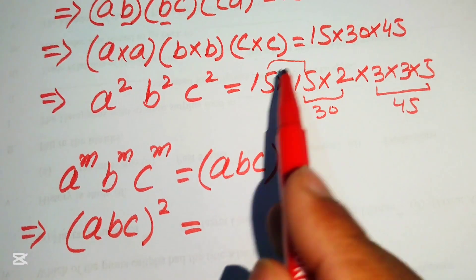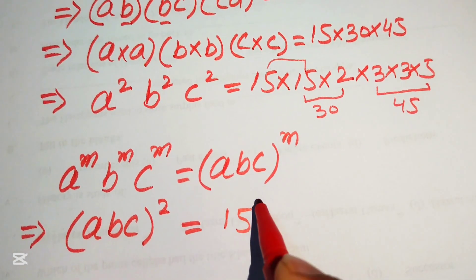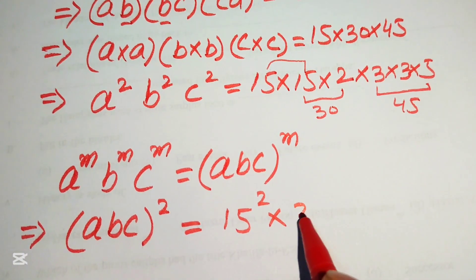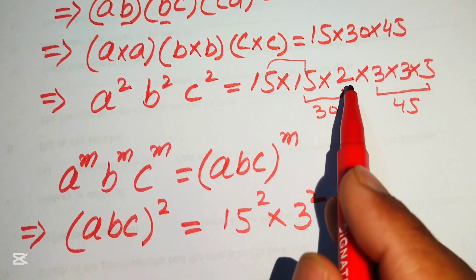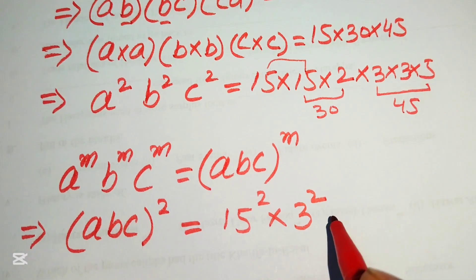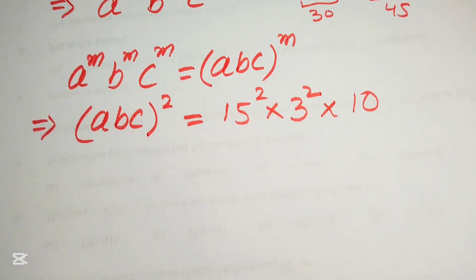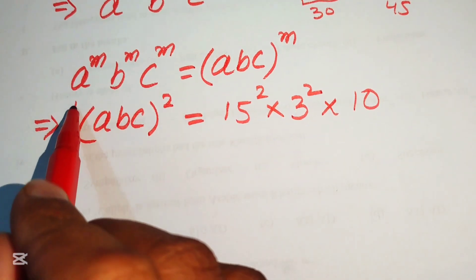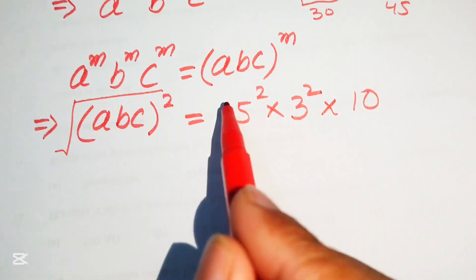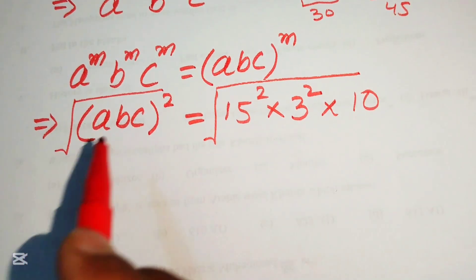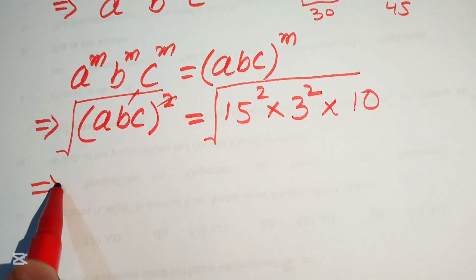So we have (abc)² = 15² × 3² × 10. To find abc, we take the square root of both sides. The square and square root cancel, giving us abc on the left.